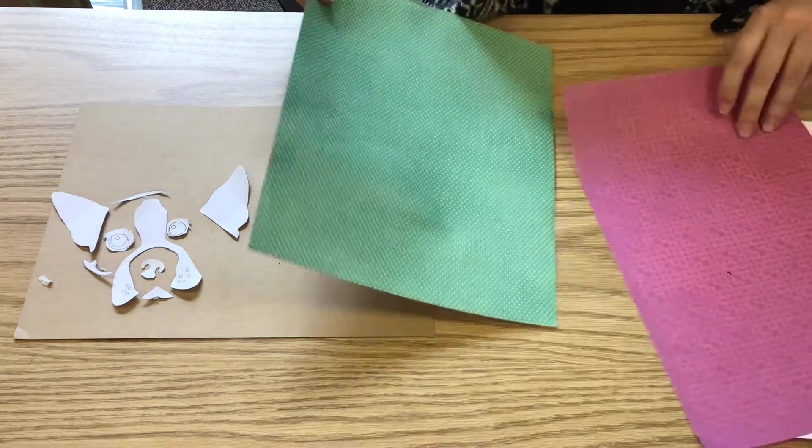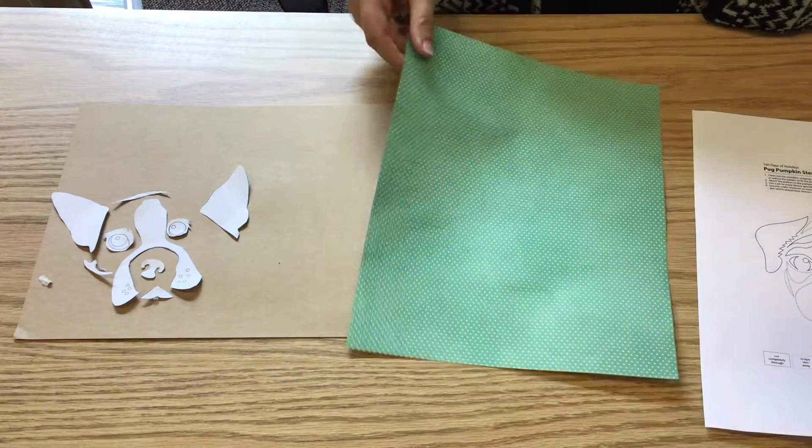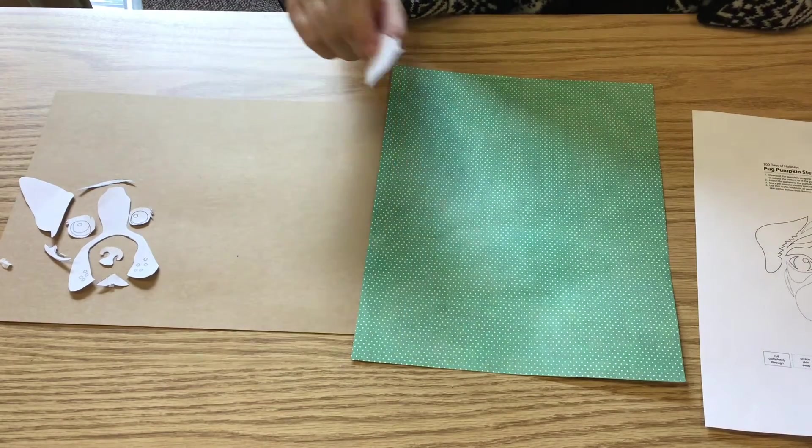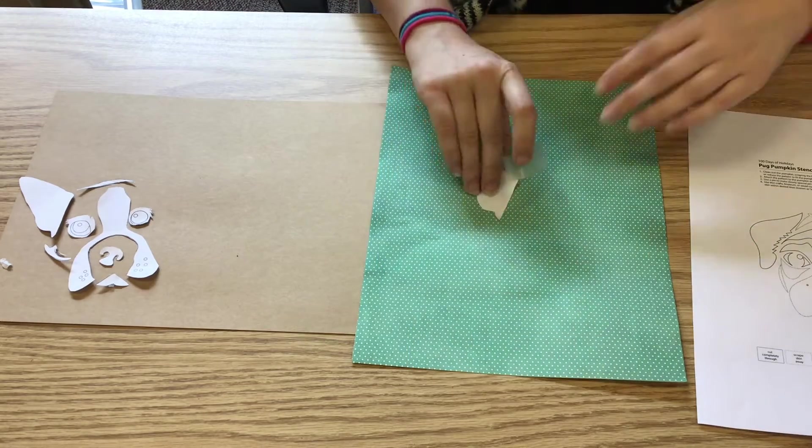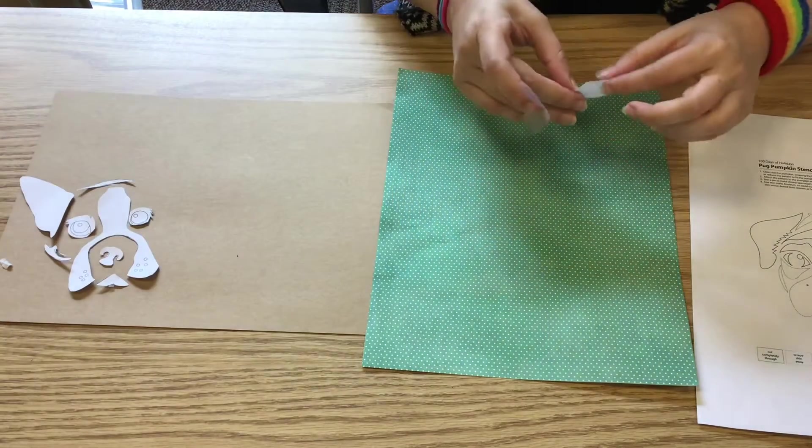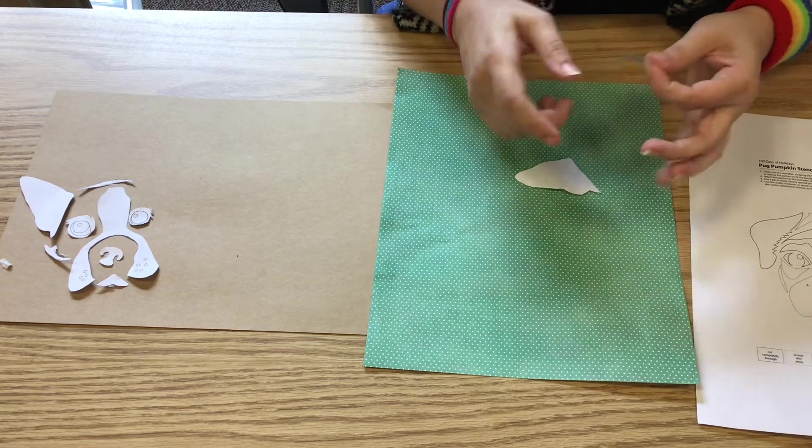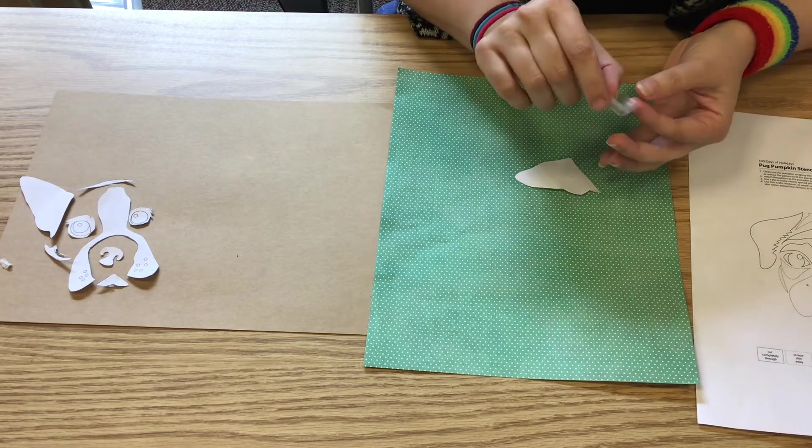And then once you have, you're gonna take your cut out shapes, and a handy trick I've learned is instead of tracing every single shape again and cutting them out one by one, which you can still do if you feel comfortable, you take a little piece of tape.